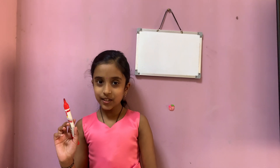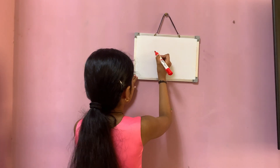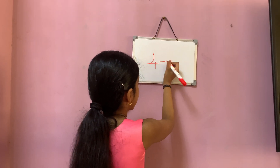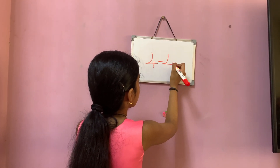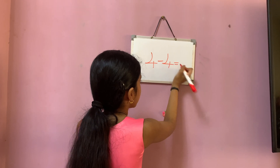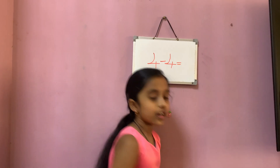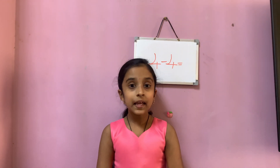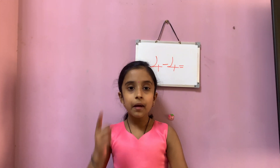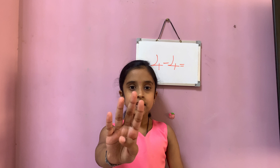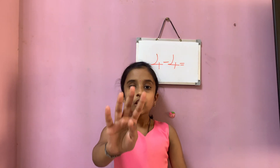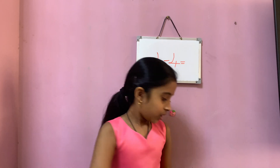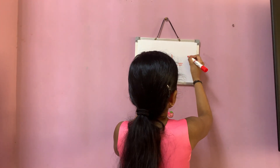Let's see another one. Here I am writing four minus four. Here both the numbers are the same, so the answer will be zero. Let's see how: four in mind and four in hand. Now let's count back: three, two, one and zero. So the answer is zero.